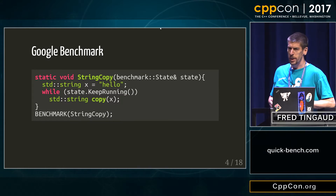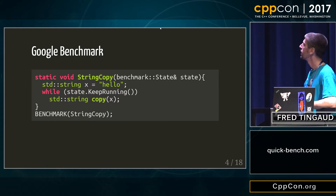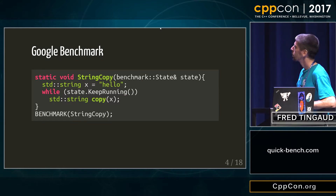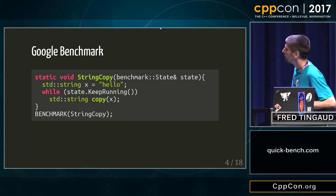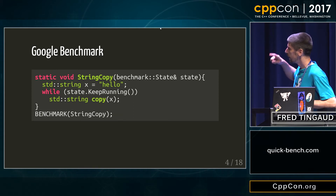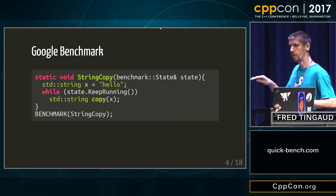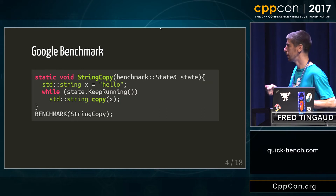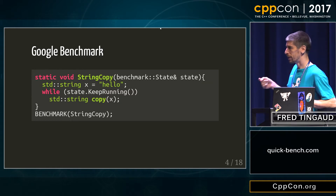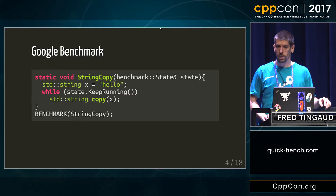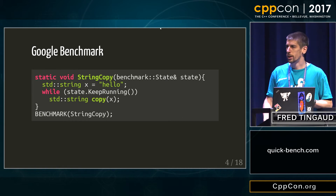Google Benchmark looks like that. You have a function that takes a state, and you have a while loop inside which will run as many times as it has to in order to get a stable value for the time it takes to run inside. Everything outside the loop will be run once, so that's where you want to put your initializations.